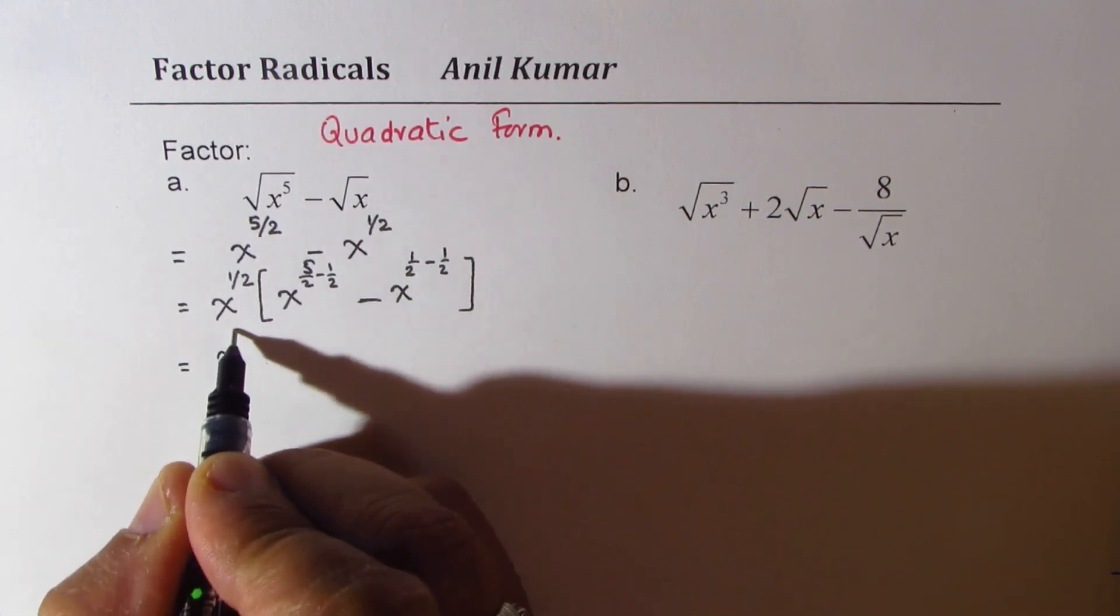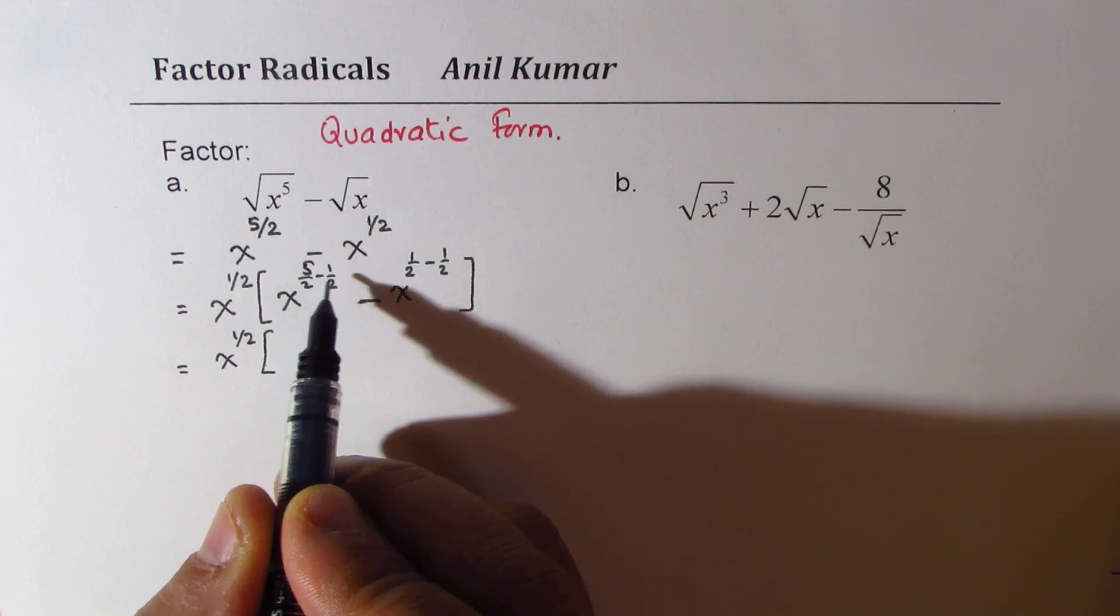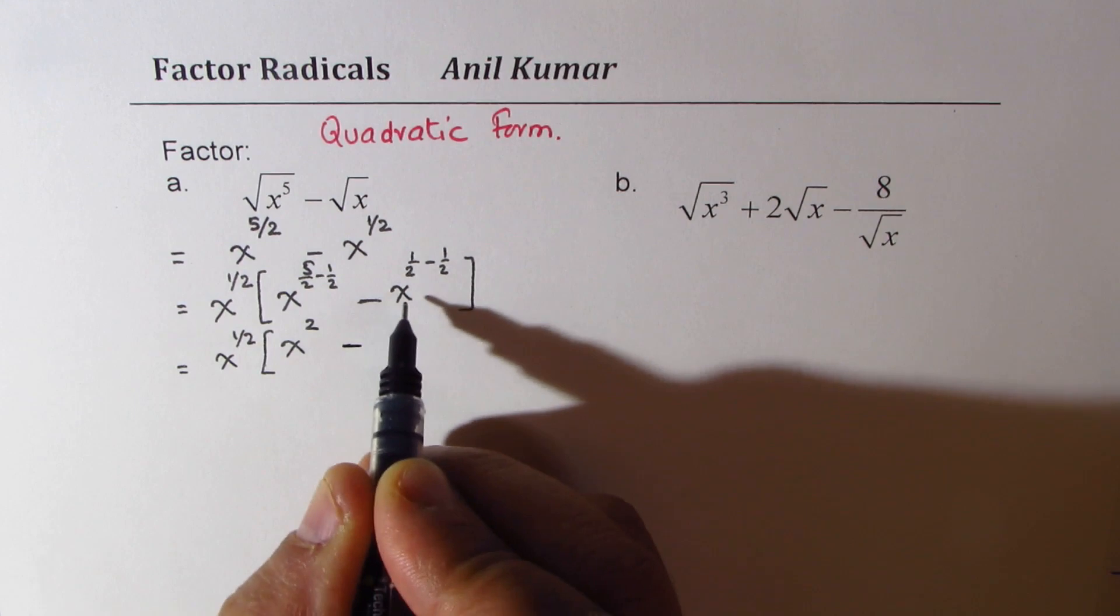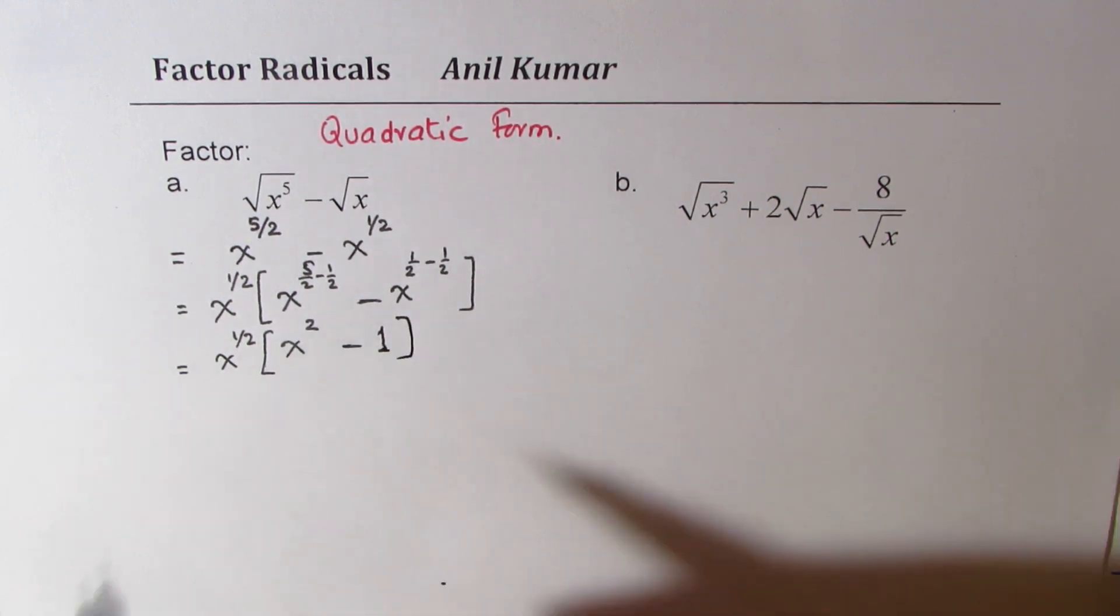So what we get here is x to the power of half, and 5 over 2 minus half is 4 over 2. So 4 over 2 is x squared, and this is x to the power of 0, which is 1. Correct?